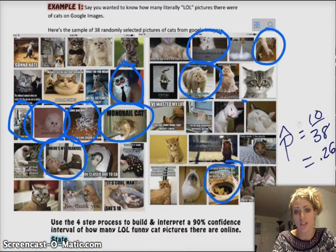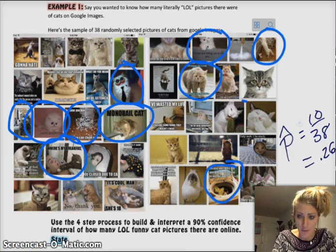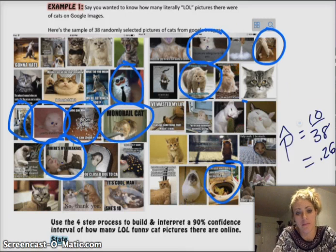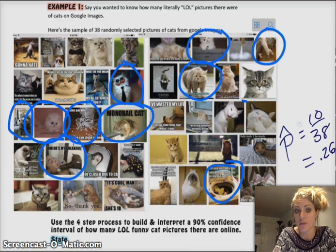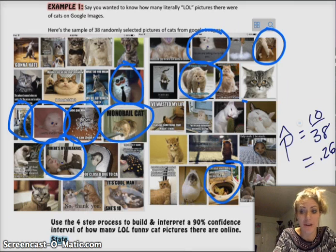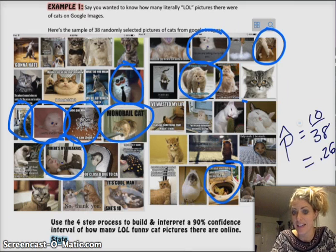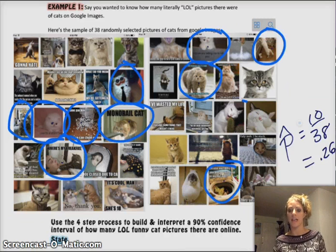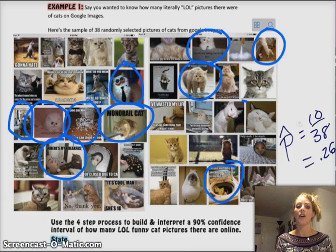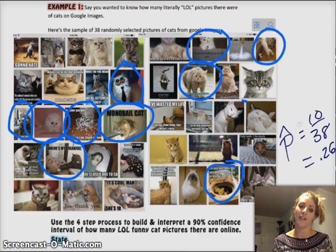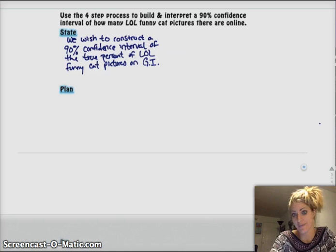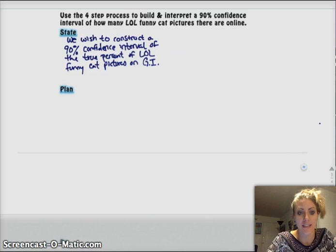We don't know what the true proportion is because I would have to look at every single possible cat picture on Google and that would be insane. So we're just taking a little sample. Ten out of 38 I laughed at. Since we don't actually know what P is, our best guess for P to start out is 0.26. Then we've got the plan. And the plan is all about checking those conditions.